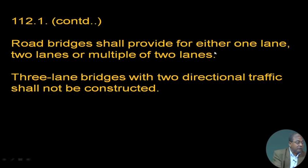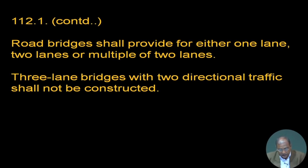Road bridges shall provide for either one lane, two lanes, or multiple of two lanes — please note this: multiple of two lanes. Generally, when vehicles are moving in opposite directions, if it is a single lane you must wait and give way; double lane means one lane each direction. For three lanes, there is an ambiguity about which lane is used by which direction.